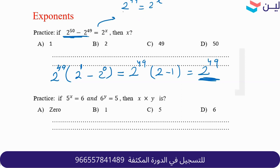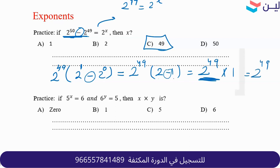Now we have 2 to the 49 equals 2 to the x. Same bases — work with the powers — so x equals 49. A student asks if it's negative 2 to the 49. No — 2 minus 1 is 1, and there is a negative sign but 2 minus 1 equals 1, so it's times 1, which is just 2 to the 49.